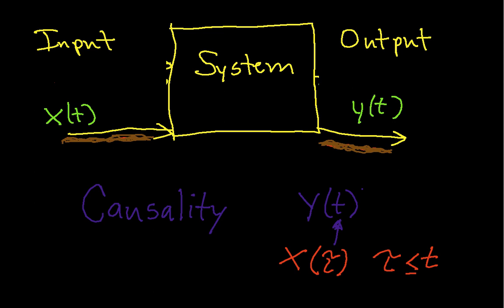What this is saying is that the system to get the output at a particular time can look at the current time, which is T, and all of the past time, but it can't look into the future. So a causal system cannot look into the future to determine what its output is.